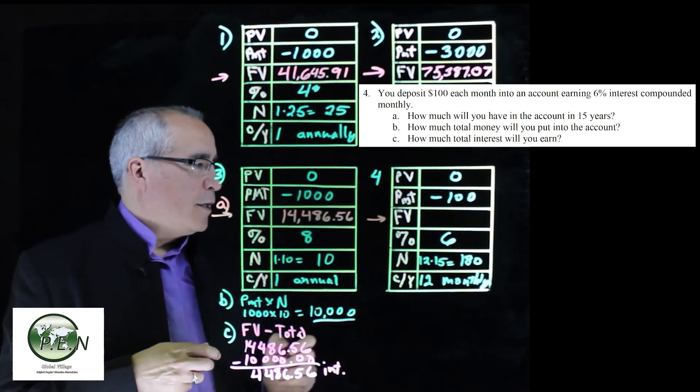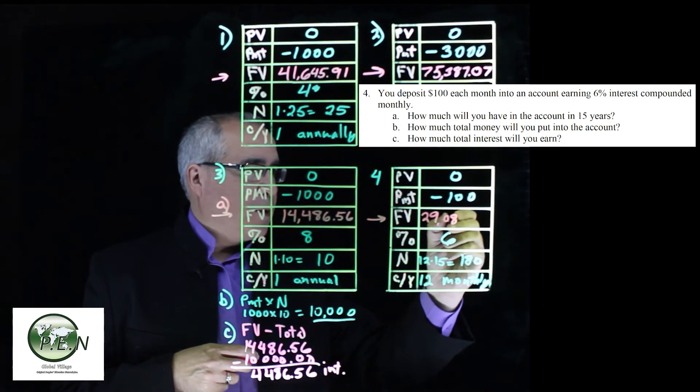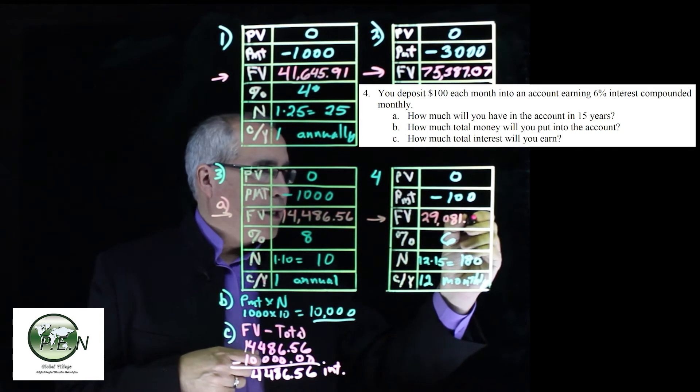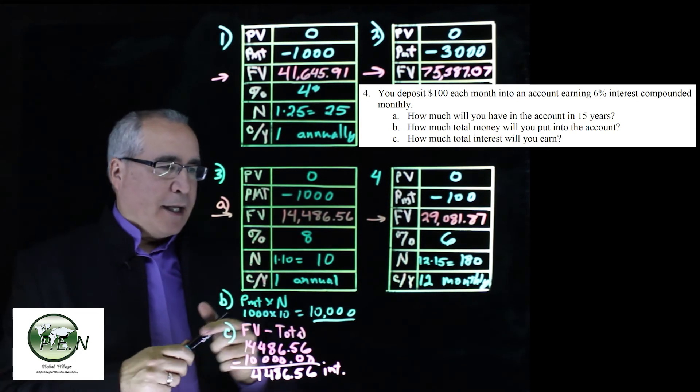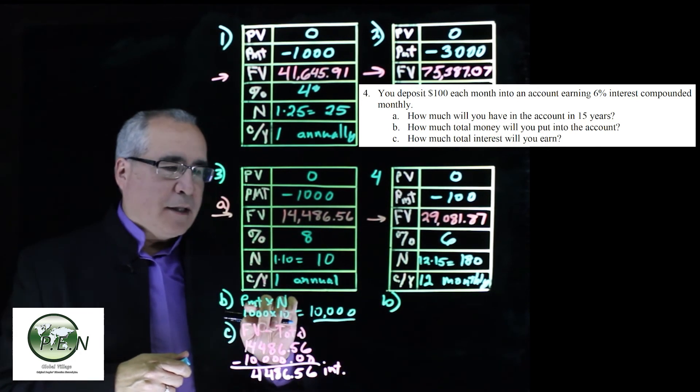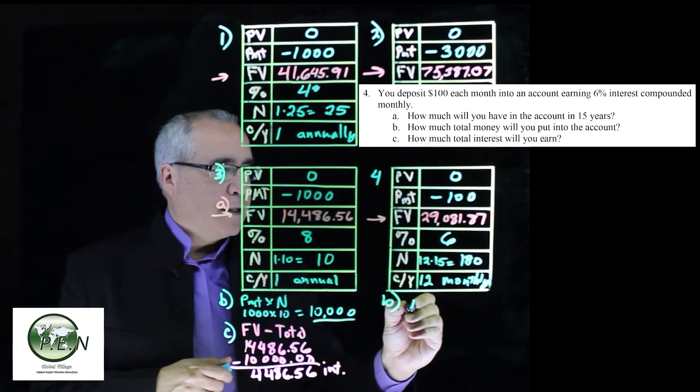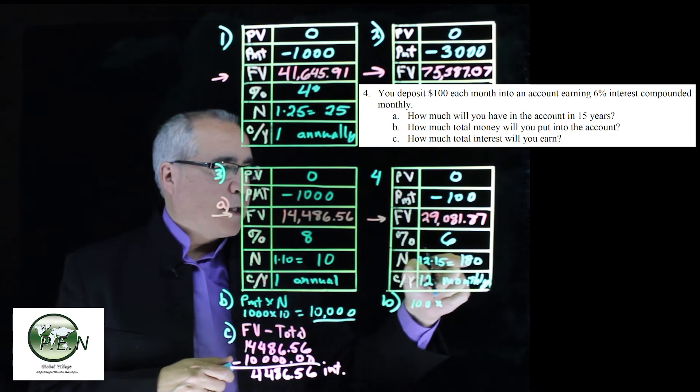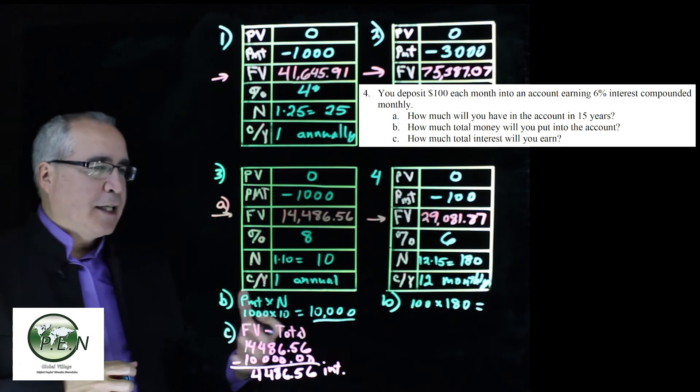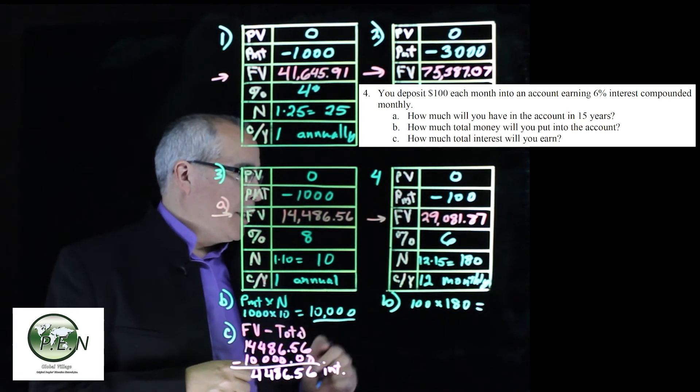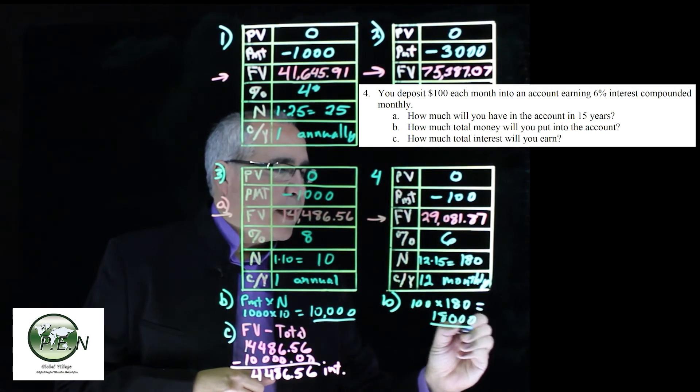When we click on the future value button, we will see we get $29,081.87. So to answer the B part, again, we're going to take the payments times the number of periods. In this case payments are 100 multiplied by the number of periods, which is 180. So we've made 180 deposits of $100 each. That gives us $18,000 as our answer to B.